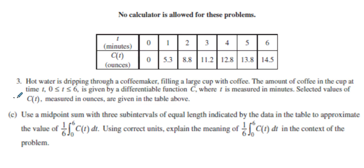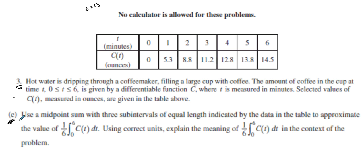We're going through another example of number three — this is the 2013 FRQ for the AP AB exam, no calculator allowed. We're on part C, having completed parts A and B in a previous video. We're given a table, and whenever you see a table, chances are you'll be using a Riemann sum — left, right, midpoint, or possibly the Trapezoidal rule. Part C says to use a midpoint sum, which is essentially a Riemann sum.